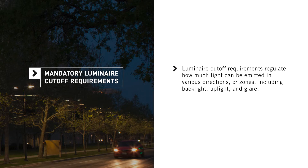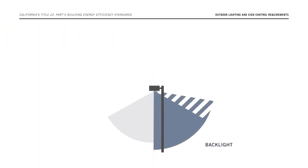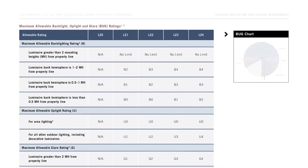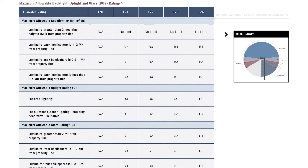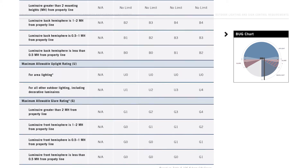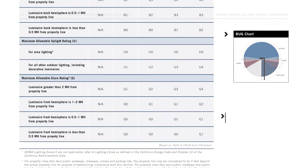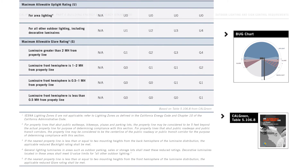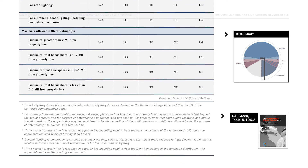Now let's talk about the mandatory requirements pertaining to luminaire cutoff and the exceptions. Luminaire cutoff requirements regulate how much light can be emitted in various directions or zones, including backlight, uplight, and glare. Many types of outdoor lights must comply with these cutoff requirements, which are collectively referred to as BUG requirements. The Energy Code's BUG requirements specify maximum zonal lumens and only apply to outdoor lights rated 6200 initial lumens or more. Specific requirements are provided in Title 24, Part 11, Section 5.106.8, also referred to as the CalGreen Code.